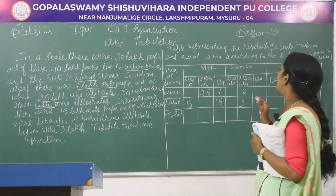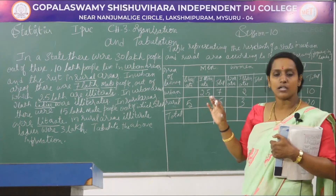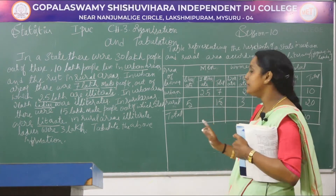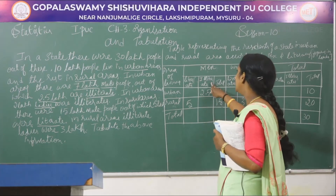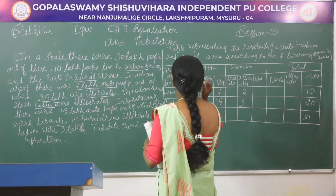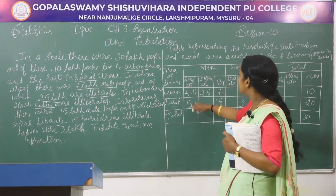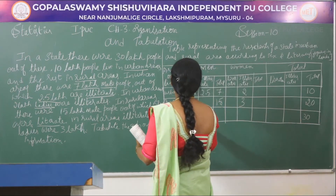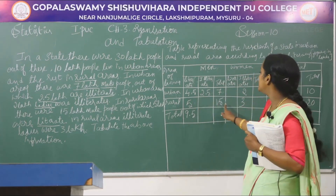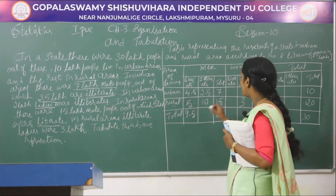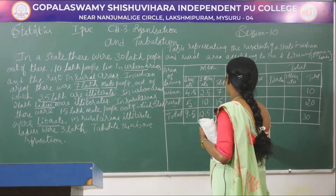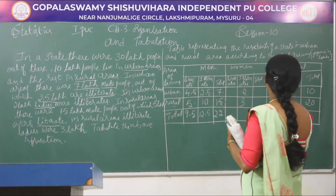Using this data, we complete the table. In urban area, total men is 7 lakhs and illiterates are 2.5, so remaining literates will be 4.5. Total literates: 4.5. In rural area, men total is 15 lakhs and literates are 5, so remaining 10 lakhs are illiterates. This total is 12.5 lakhs, and 7 plus 15 is 22 lakhs for men total.